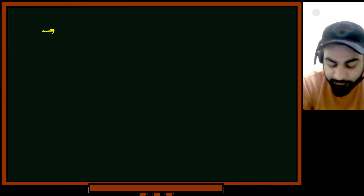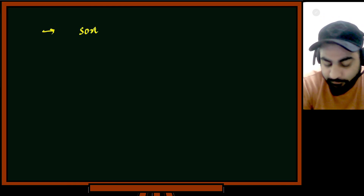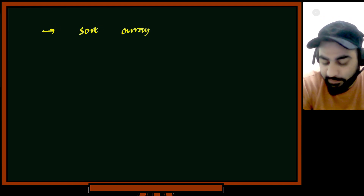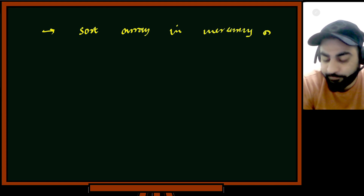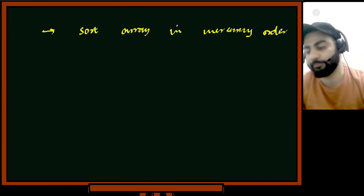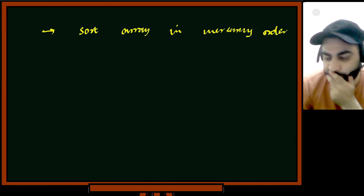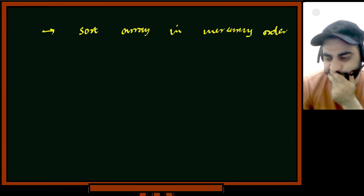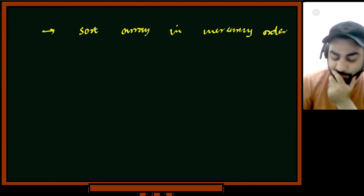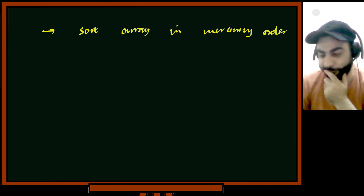Another approach: if we sort the array in increasing order and take the difference between the last element and the first element, that will be the maximum profit — we buy at minimum price. But again, there is a problem: order matters here.